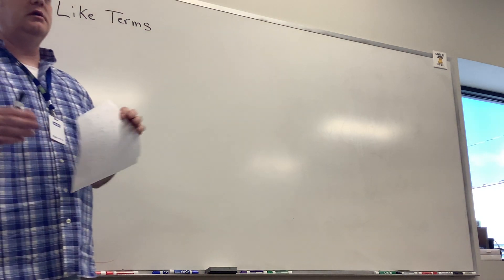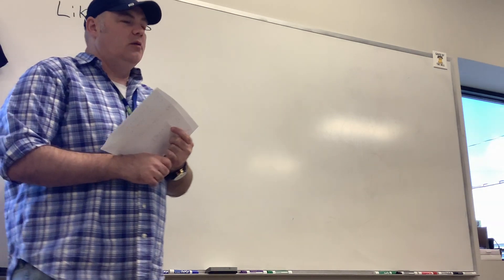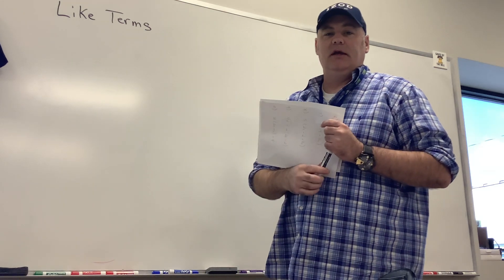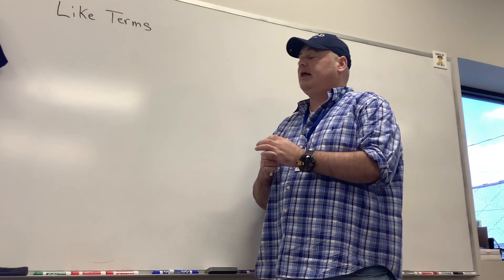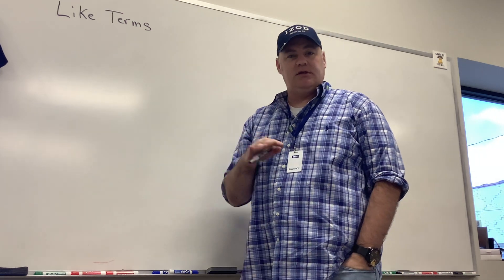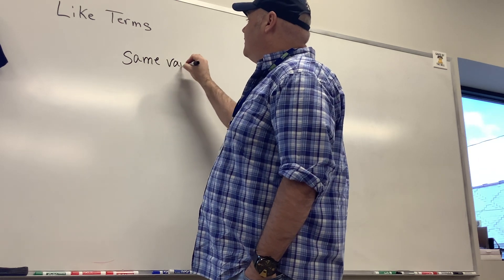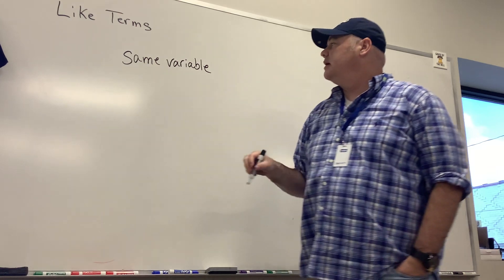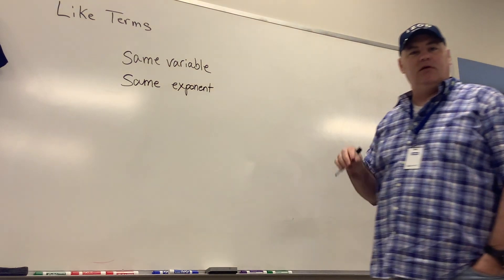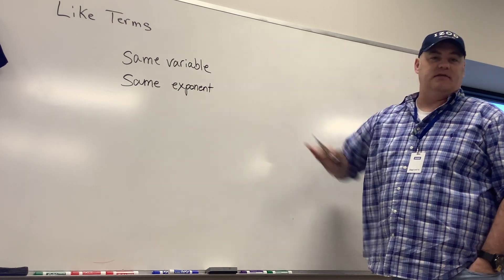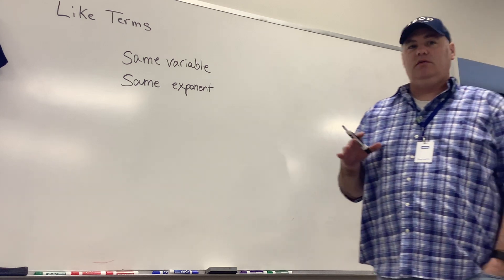I want to cover like terms before we get into the bigger problems, because this is going to be a part of those problems. If we can break it down and make them simpler and smaller, then no matter how big they get we can still do them. When we're doing bigger problems, the first thing we have to do is combine the like terms — the ones that are alike. In math, we may not have covered this before, but basically like terms are ones that we can combine. In order to combine them, they need to have the same variable — a letter — and the same exponent, that little number up above.